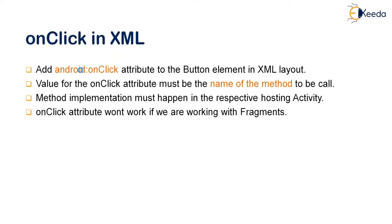How can we handle it through the onClick attribute in the XML layout? In our button widget code we add the onClick attribute, and its value is going to be the name of the method — for example, loadButton, unloadImage, sendMessage, and so on. The method implementation must happen in the hosting activity. So when you add a name like 'sendMessage' to this onClick attribute, that sendMessage method must be implemented inside the connected activity.